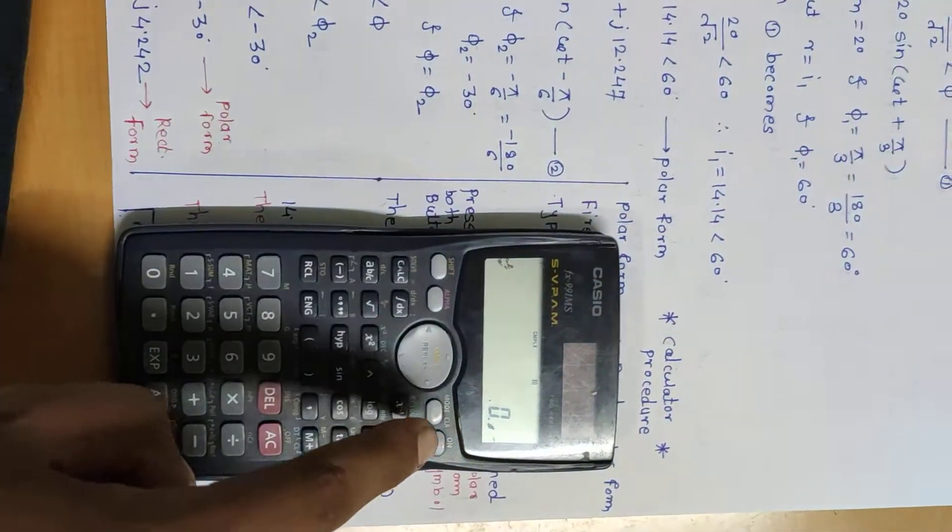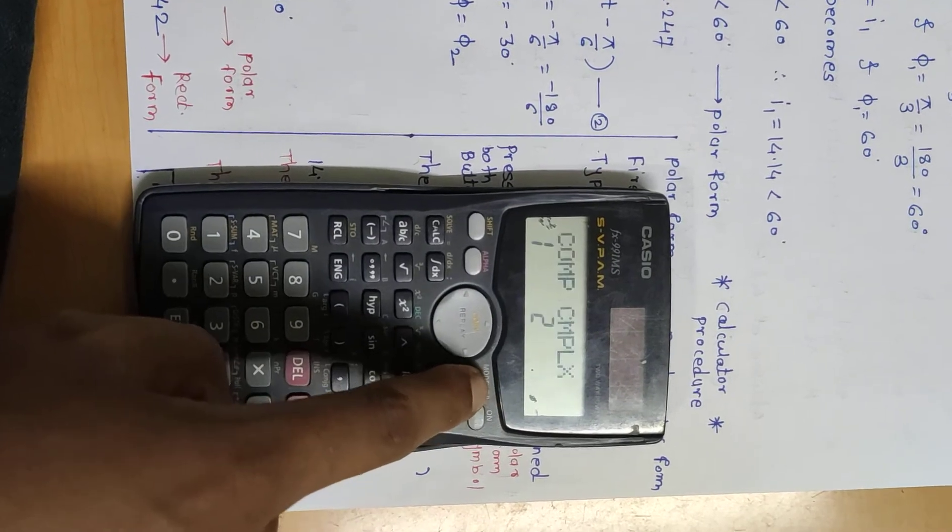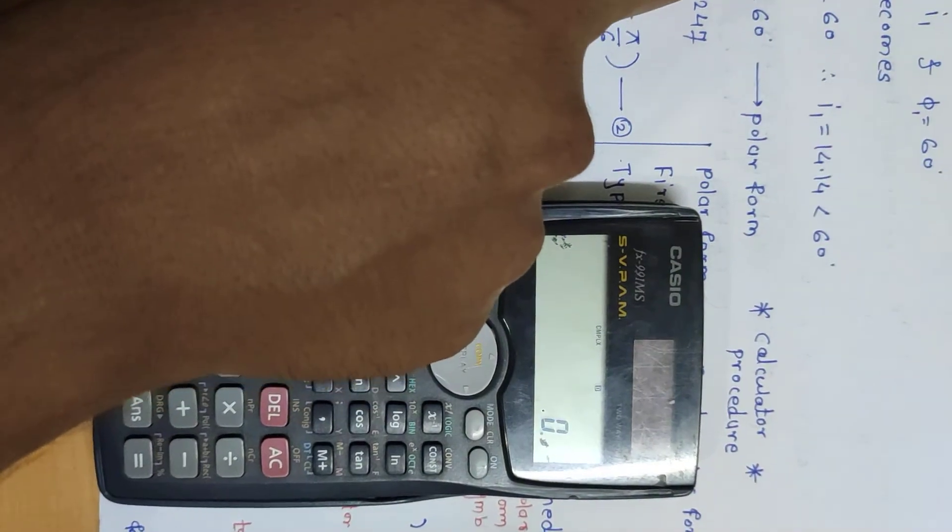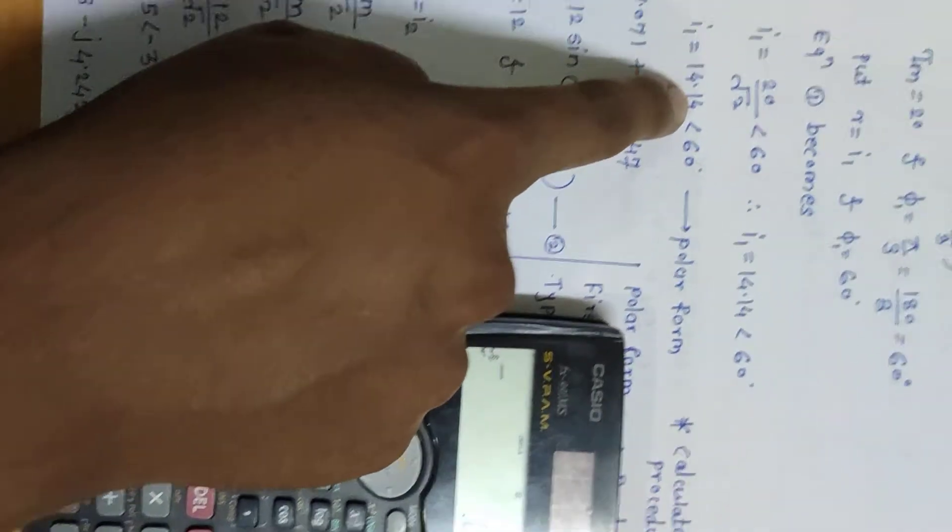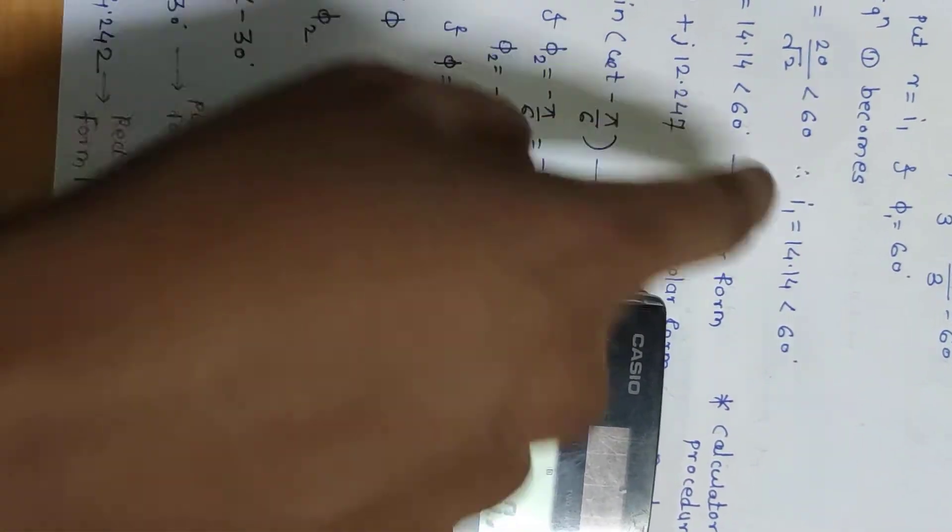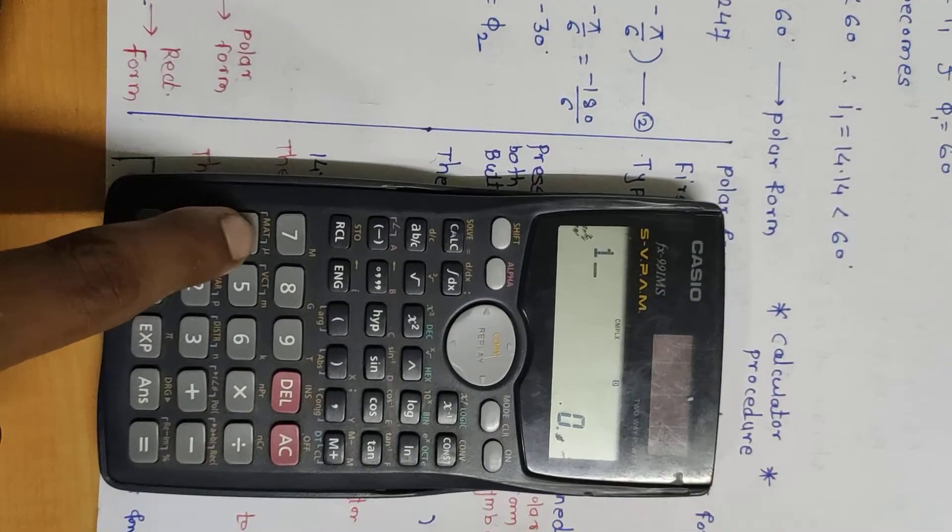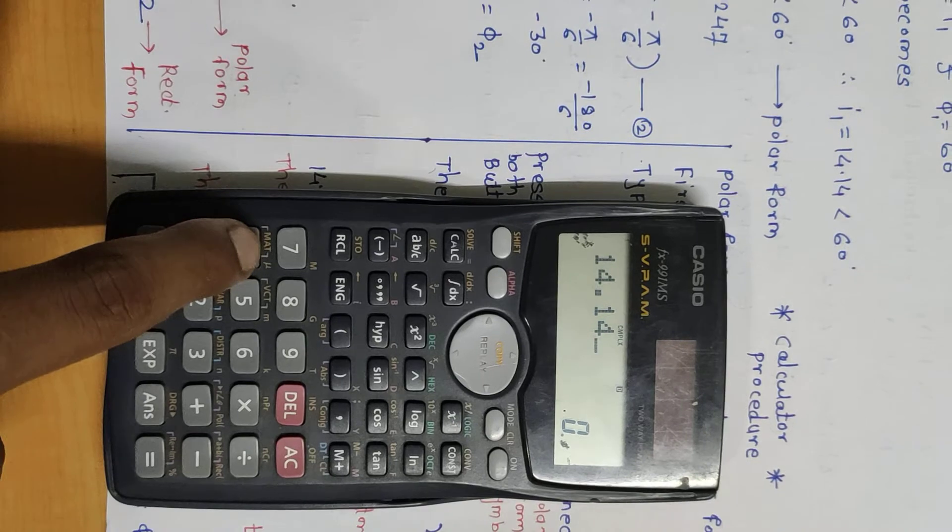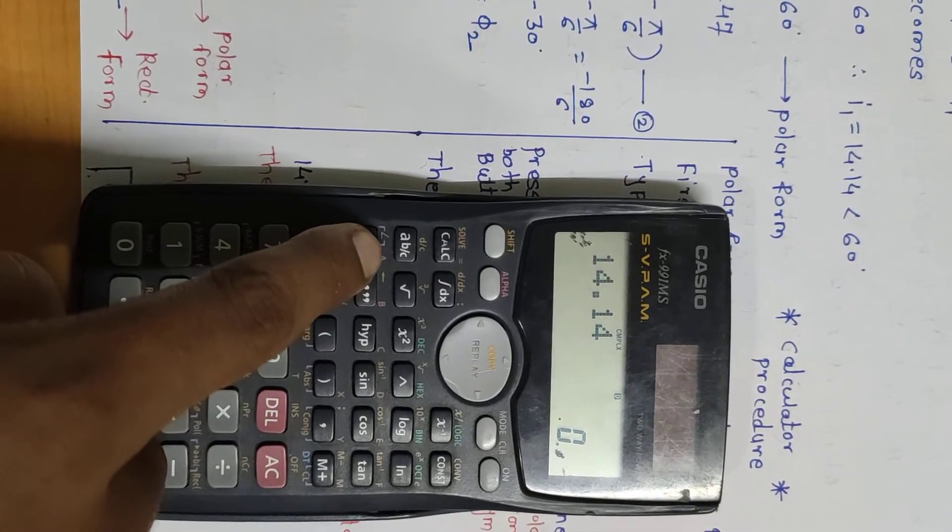First, select mode - complex mode 2. Then in calc, type 14 less than 60 for polar form. Type 14.140, then the angle symbol. Press shift and angle, then 60 degrees. This is the polar form.